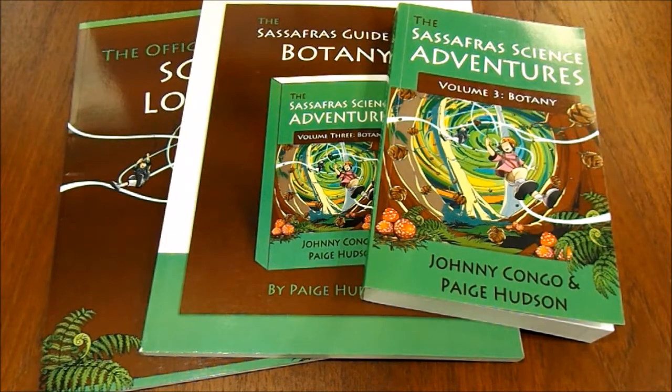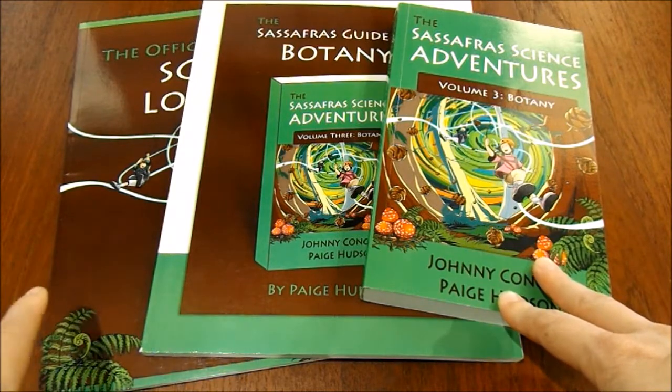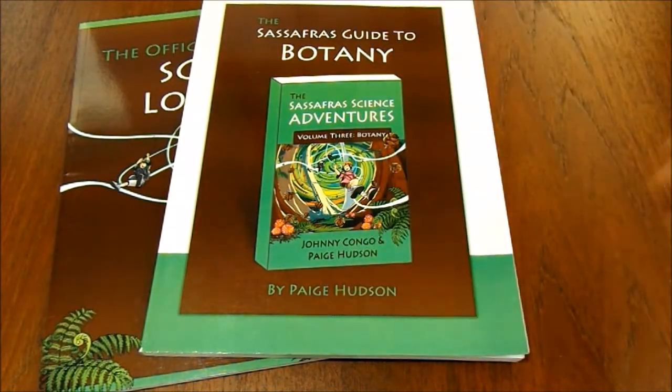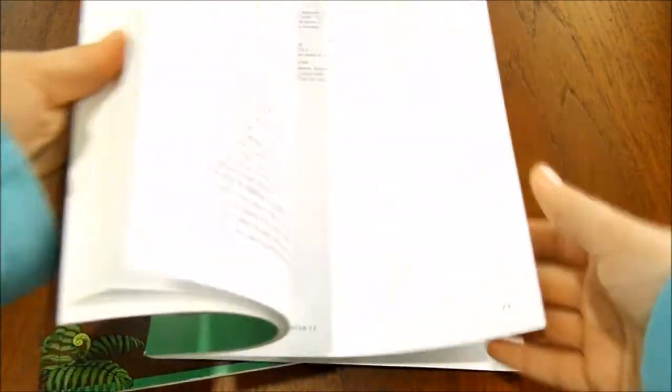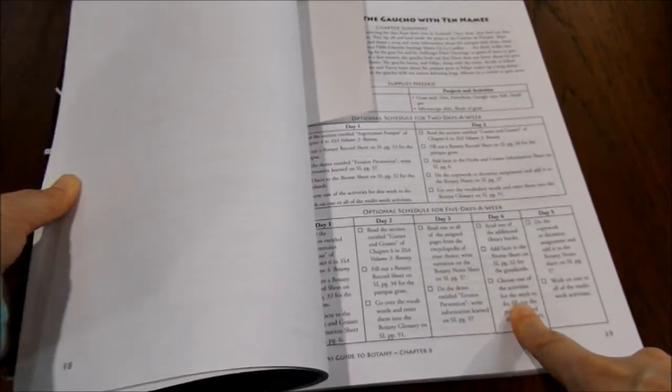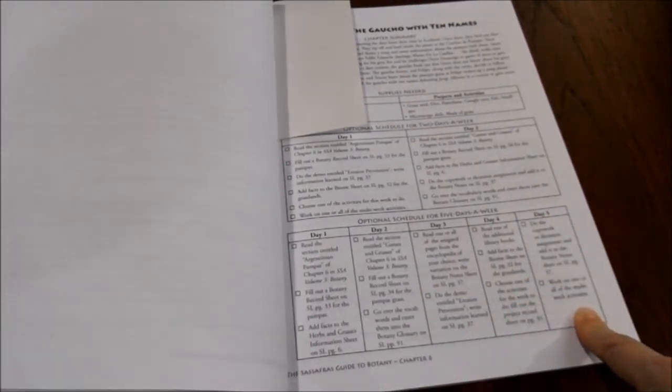Hey guys, Paige Hudson here. I just wanted to take you through how we use the novel with the activity guide and the logbook in our week. The activity guide is of course where we get our main information from, where you have the demonstrations and everything you need for the week. We use a five-day-a-week schedule, more or less, except we leave our Fridays free to do nature study.